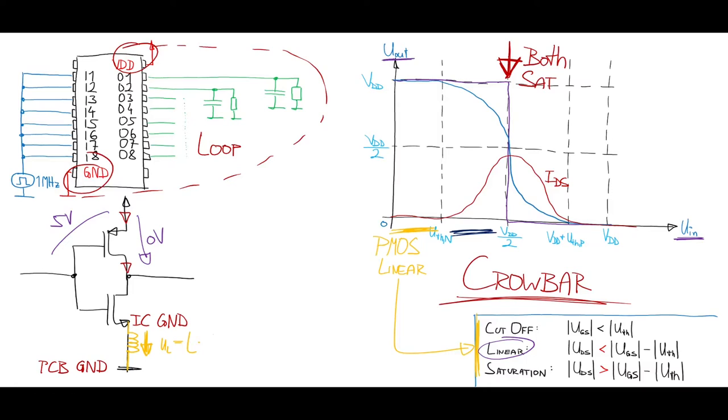Besides the crowbar current, there is another value we need to consider: the dynamic switching current.